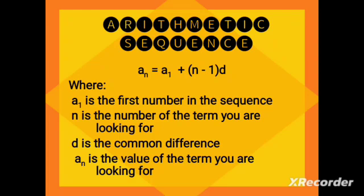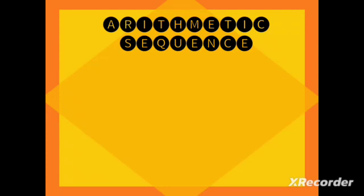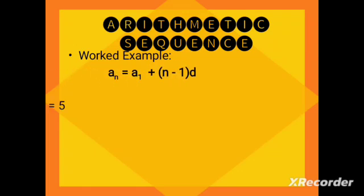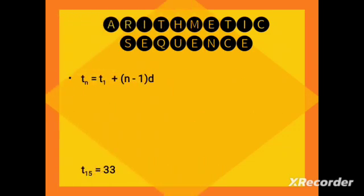In number two, we have 27, 9, 3, 1, one-third, and we need the next term. We find the common ratio first, then multiply it by the last term to get the next term. The common ratio is 1/3, because 9 over 27 is 1/3, and 3 over 9 is still 1/3. So 1/3 times 1/3 gives you 1/9. You do the same with numbers 3 and 4 to determine their next terms.